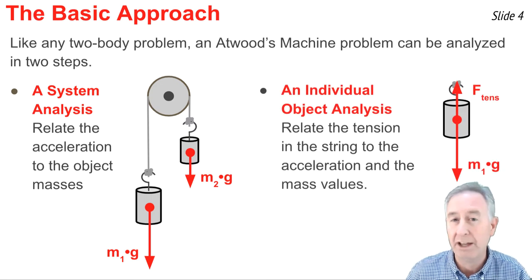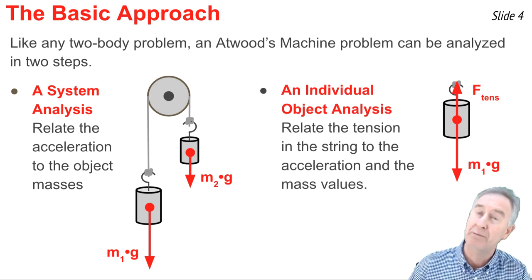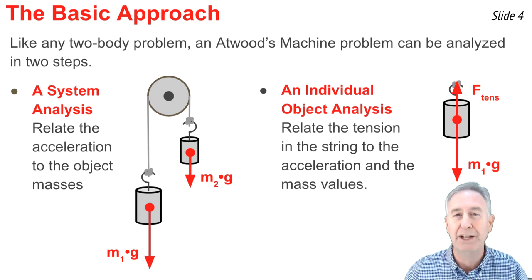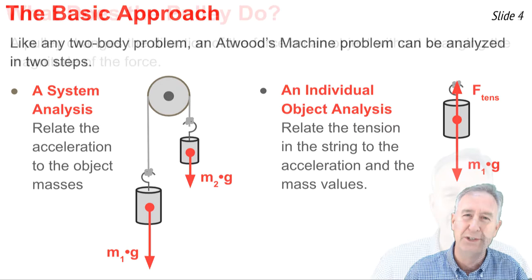Then in the second step, we pick either one of the objects. It really doesn't matter which one you pick. You draw a free body diagram, and you apply Newton's second law in order to relate the mass of the object, the acceleration, and the tension in the string.